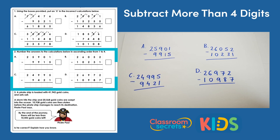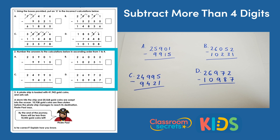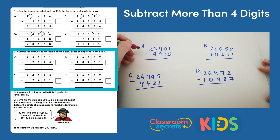Question 2 says: number the answers to the calculations below in ascending order from 1 to 4. So what we need to do is solve the calculations and work out which number is the biggest and which is the smallest from the answers we get. Let's start by solving the calculations.